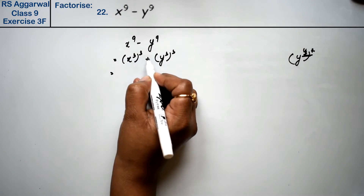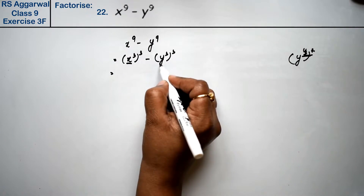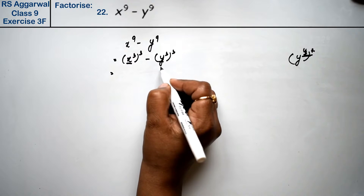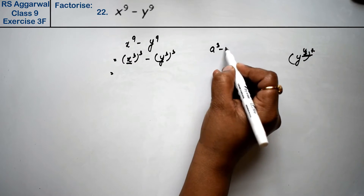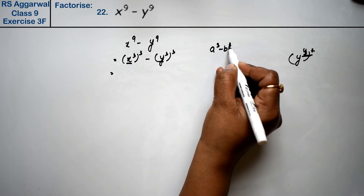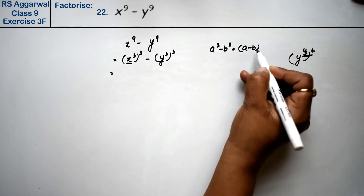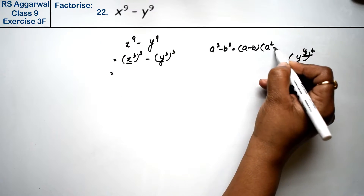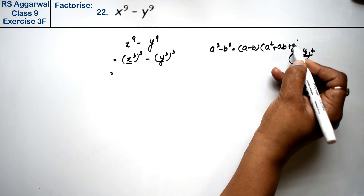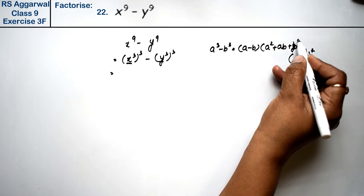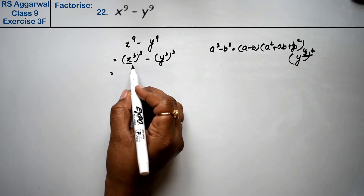Now, applying a cube minus b cube formula: where a is x³ and b is y³. So a cube minus b cube equals a minus b, times a square plus ab plus b square.